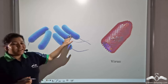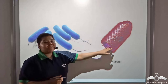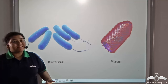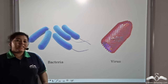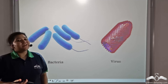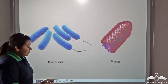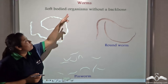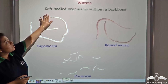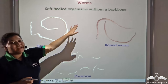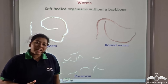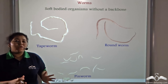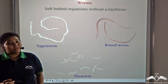Bacteria and viruses are not the only organisms that cause diseases in man and derive nutrition from their living hosts. There are other organisms known as worms — soft-bodied organisms without a backbone that mostly inhabit water and moist soil.